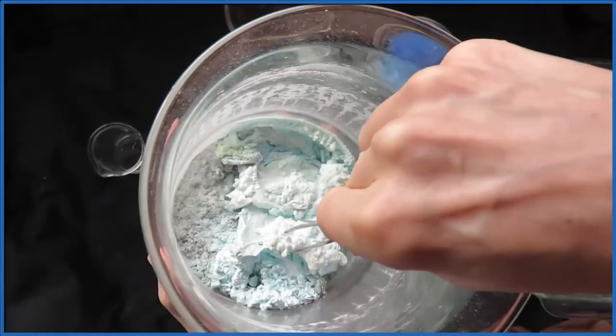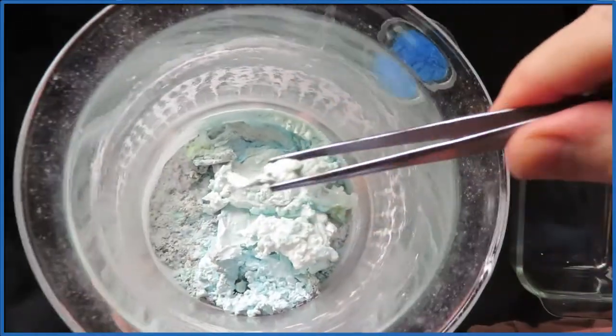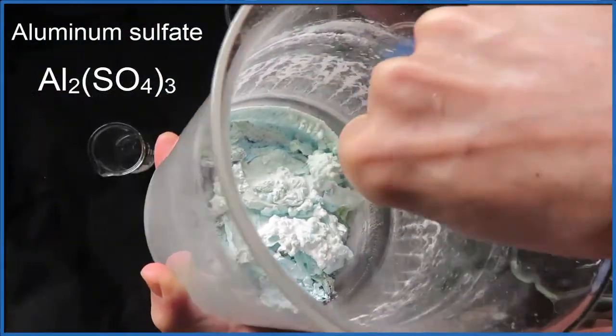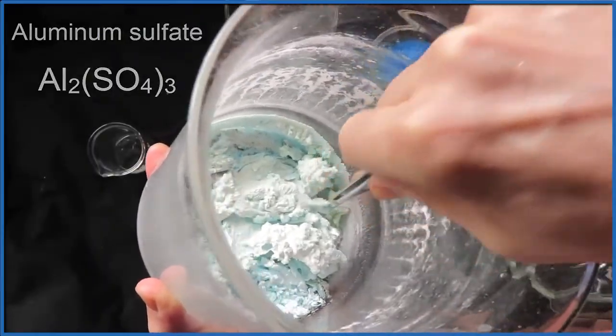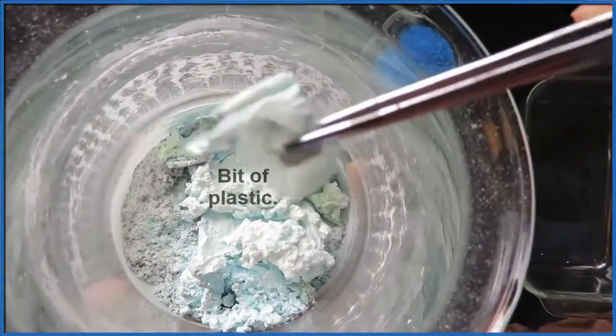That white substance at the bottom of the beaker, that's the aluminum sulfate. It becomes a solid once the water's gone. So that's solid aluminum sulfate, all the white on the top.